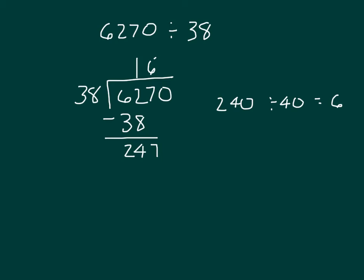6 times 38. 6 times 8 is 48, regroup of 4. 6 times 3 is 18, plus 4 is 22. So we're subtracting 247 minus 228. That's 19.